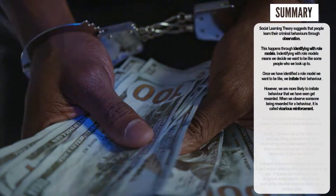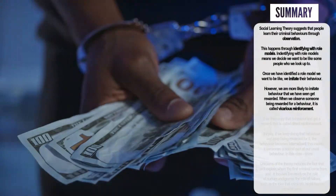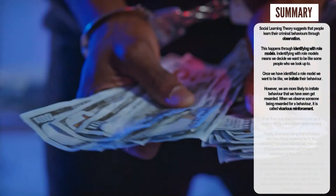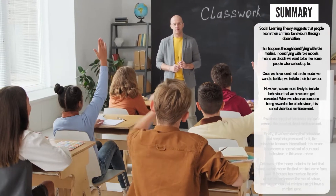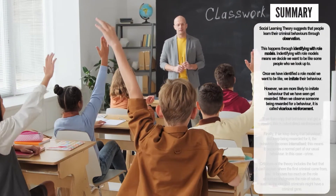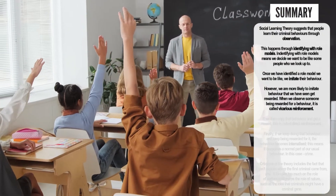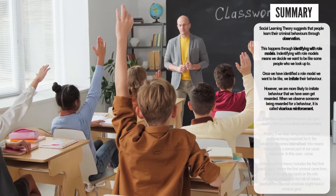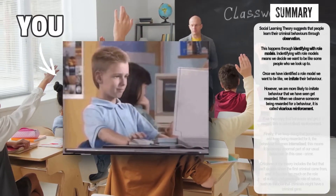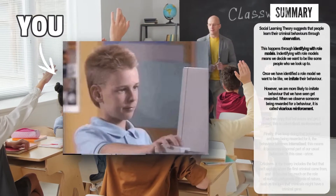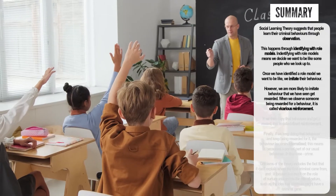When we observe a behaviour being rewarded we go through a process of vicarious reinforcement. Vicarious reinforcement simply means we observe someone being rewarded for their behaviour, so we want to do that behaviour as well. For example, if your friend copied some stuff off the internet for their homework and their teacher praised them for their work, you may think it's okay to do that and want to go ahead and do it yourself. That's vicarious reinforcement.